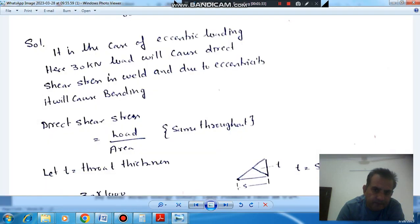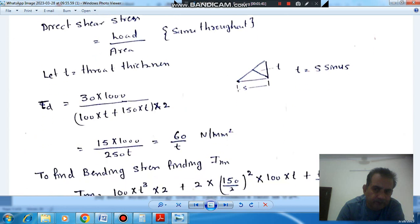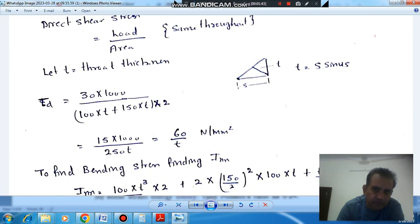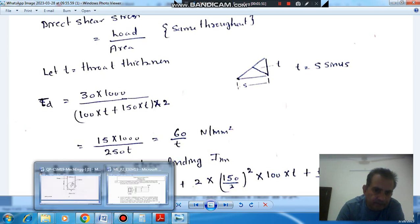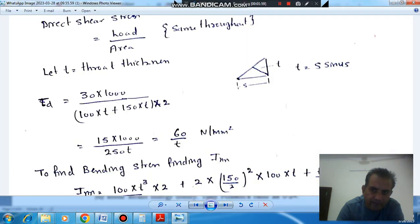So first of all calculating direct shear stress, so that is load by area. Load is given as 30 kN. Suppose T is the throat thickness of the weld and S is the size of the weld. Here you can take it as S and if you see the weld, the weld will be like that. And this is S and this is your T. So throat thickness is responsible for the strength of the weld. So that is T.